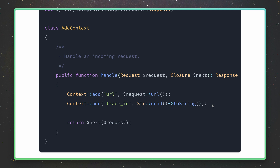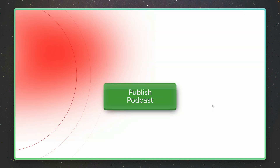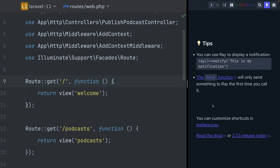To sum it up: you can store something inside the context and it will be shared throughout the whole request. It will also be shared with jobs and commands, so in your whole request and everything that happens from your request you will have this context information. But today we want to do something differently — we want to publish a podcast, and I want to show you a specific use case for the new context feature.